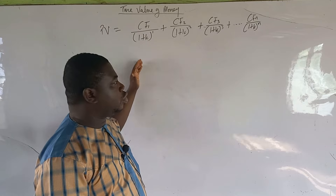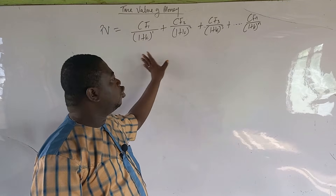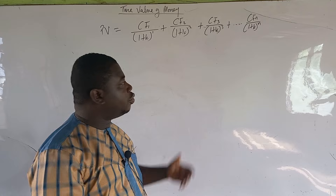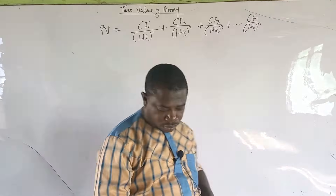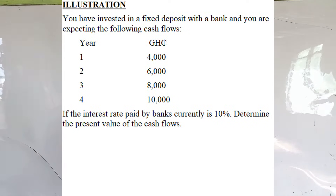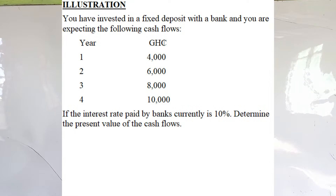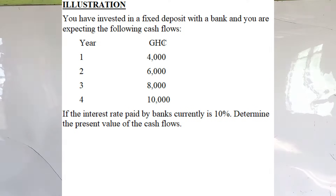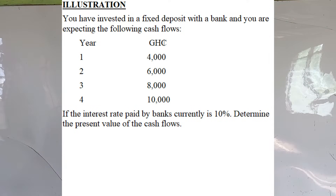I'm going to pick a question and solve it using the mathematical way, and then I'll also teach you a tabular approach so you'll be able to understand both methods. Here is the question: you have invested in a fixed deposit with a bank and you are expecting the following cash flows for the next four years.